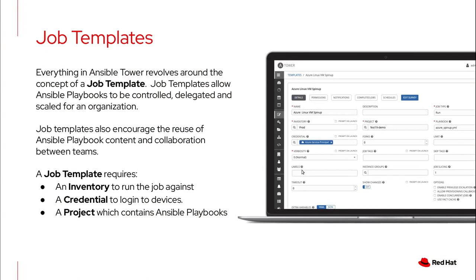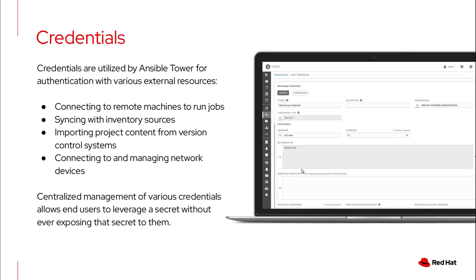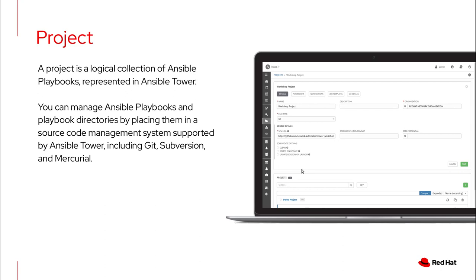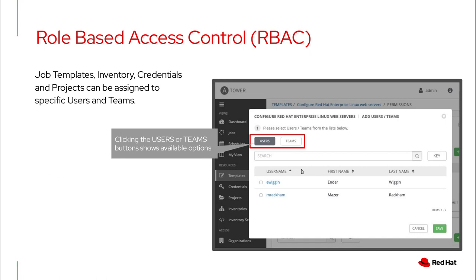Job templates: I'm going to run this playbook against this inventory - a group of servers - with the credentials to log in. You have to have an account to SSH into them. A project is literally a Git repository where you keep your playbooks in version control. Credentials are what you use to SSH in - it's called a service account. You don't log in as Bob. The RESTful API gives you the ability to call it and it is authenticated. You can call jobs via an API from a third-party application, so you can write your own integrations.